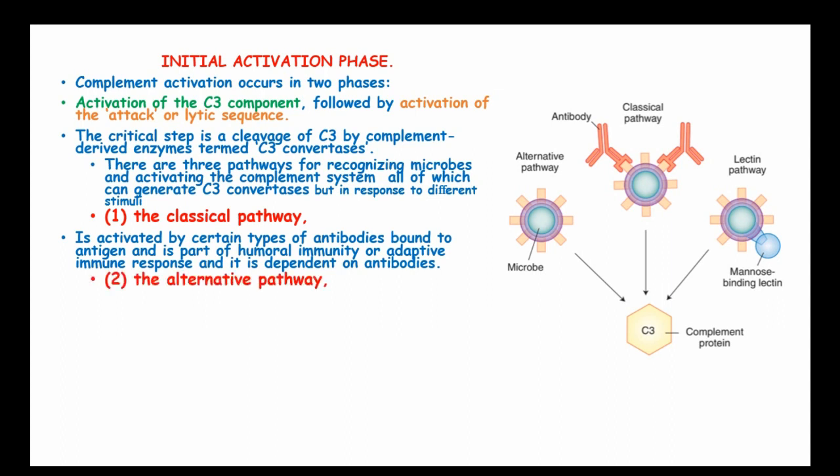The next pathway is the alternative pathway. This pathway is activated by microbial cell surfaces in the absence of an antibody and is a component of innate immunity.